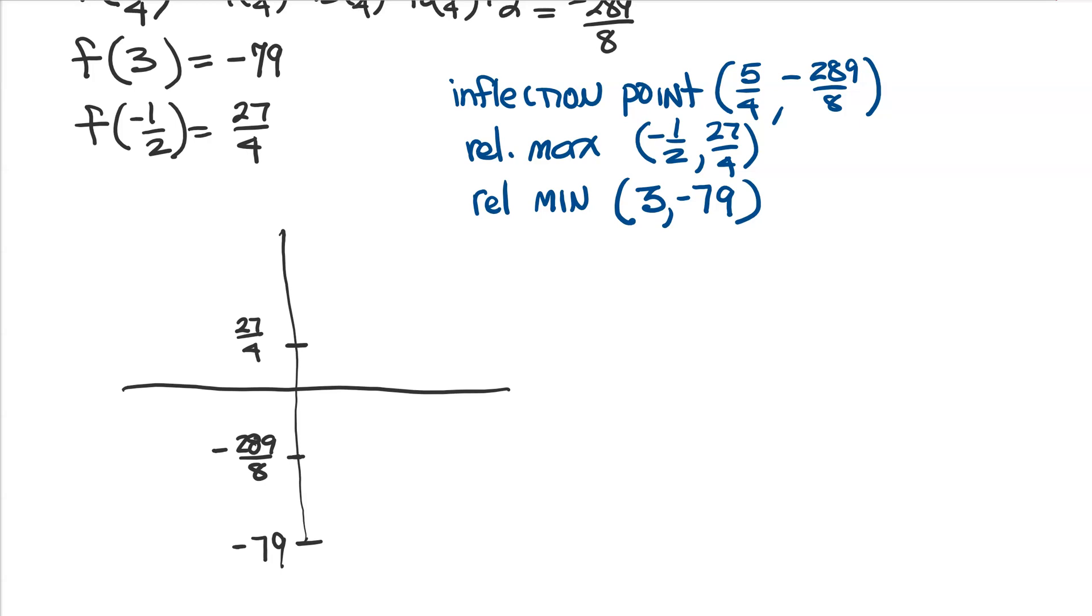So, the x values that we need to graph, we need a 5 fourths, which is about 1 and a fourth. We need to have an x value of 3, and we need an x value of negative 1 half. So, I'm just going to plot these ordered pairs on here, and then I've just got to connect the dots the right way.